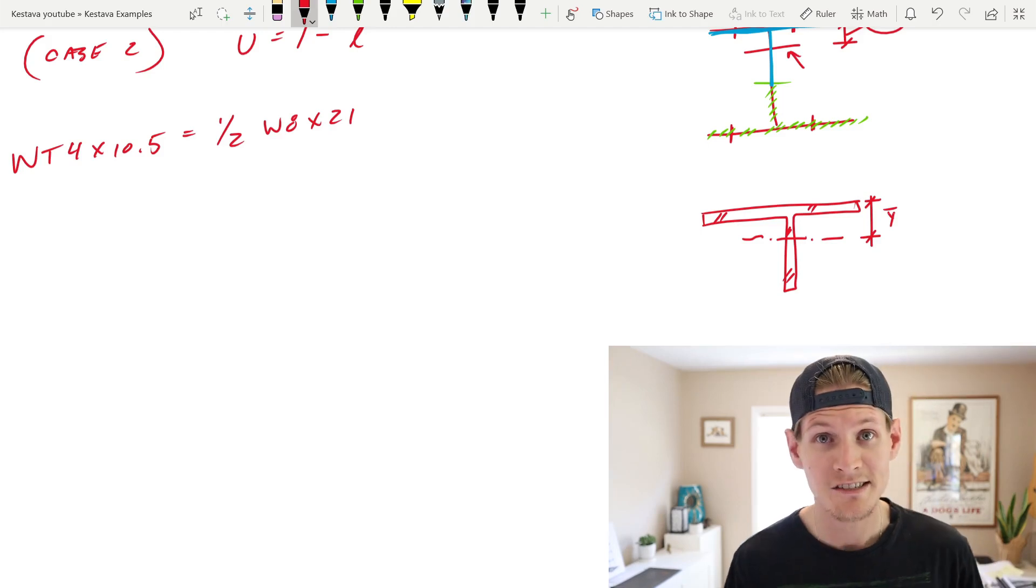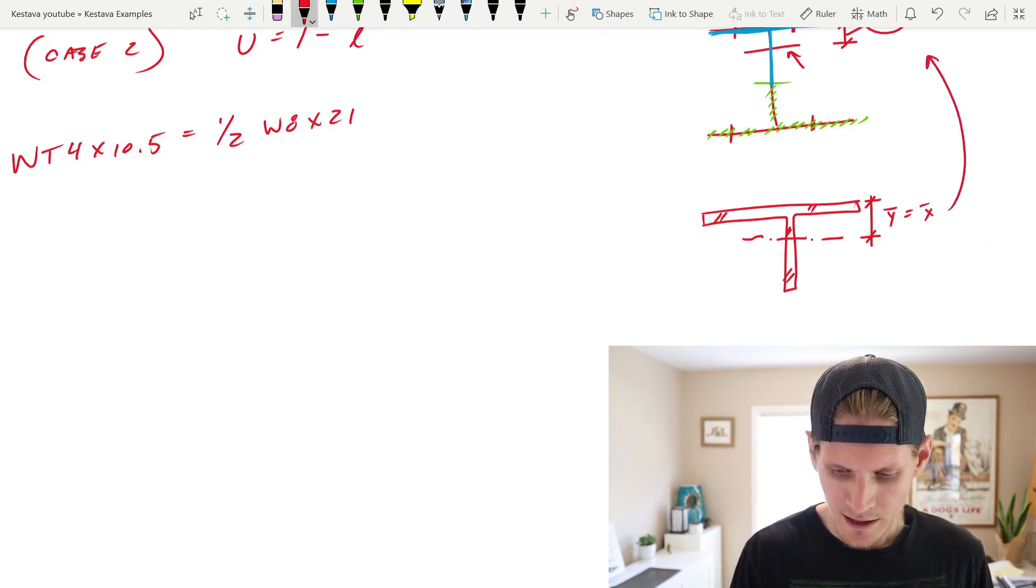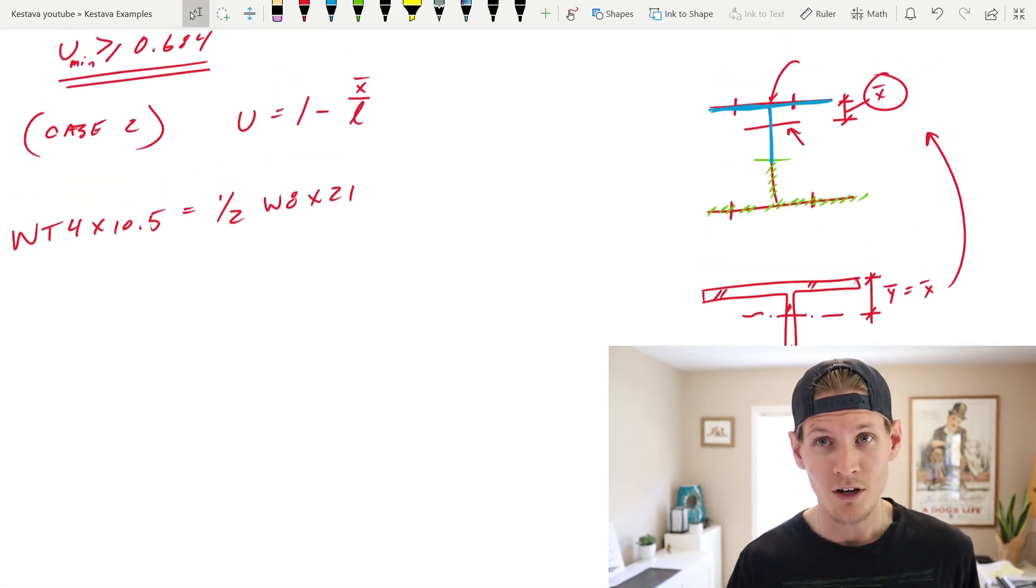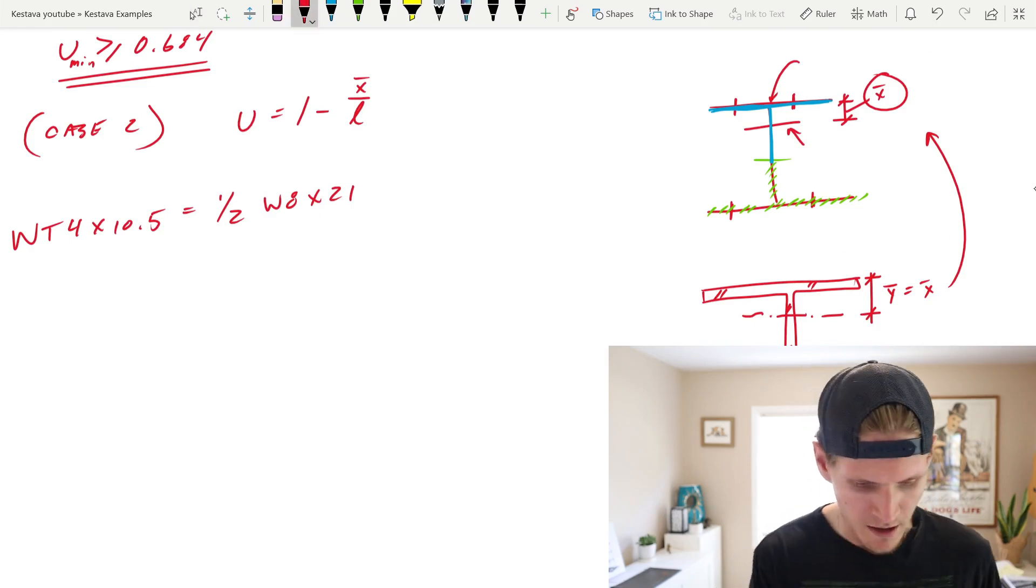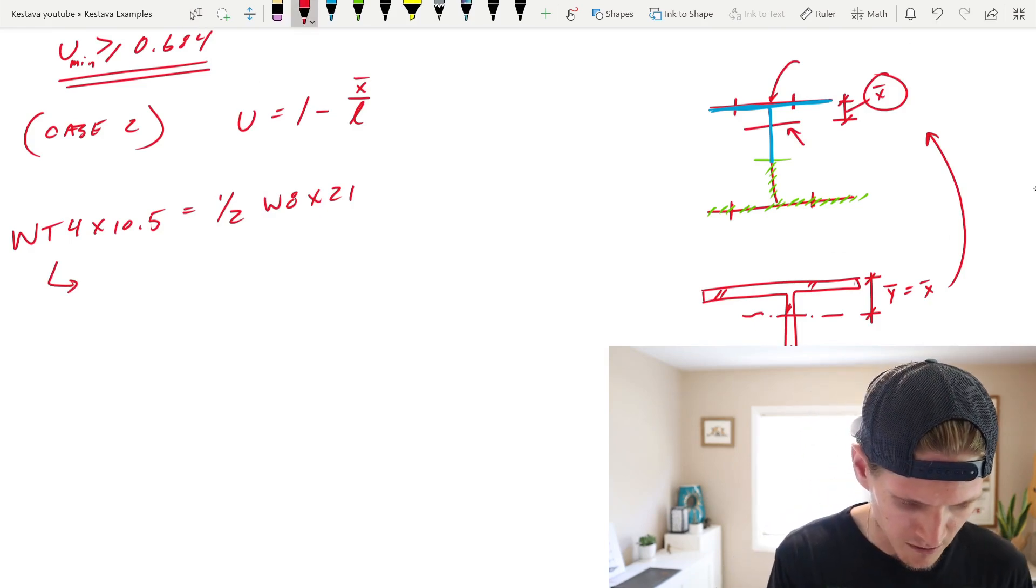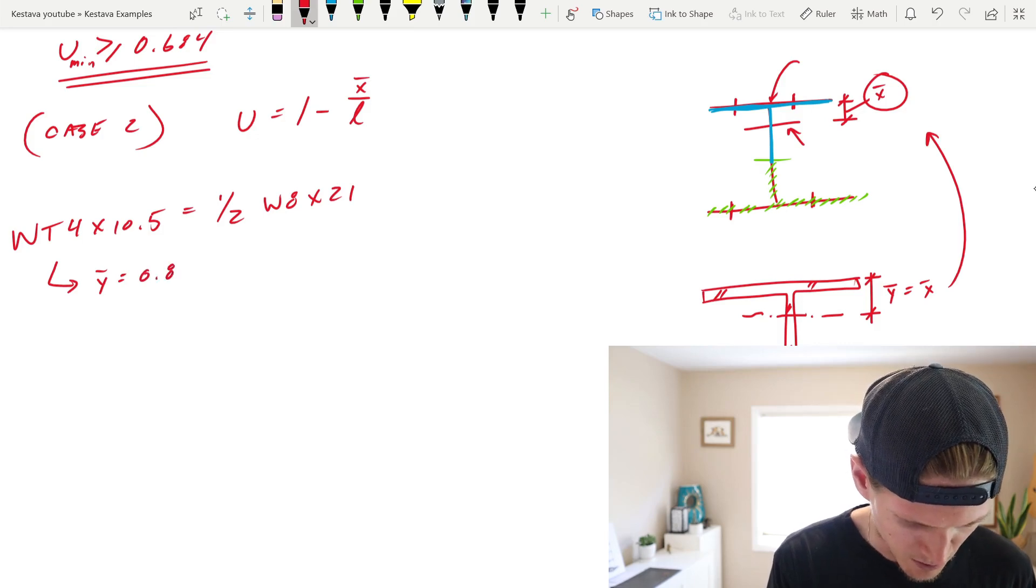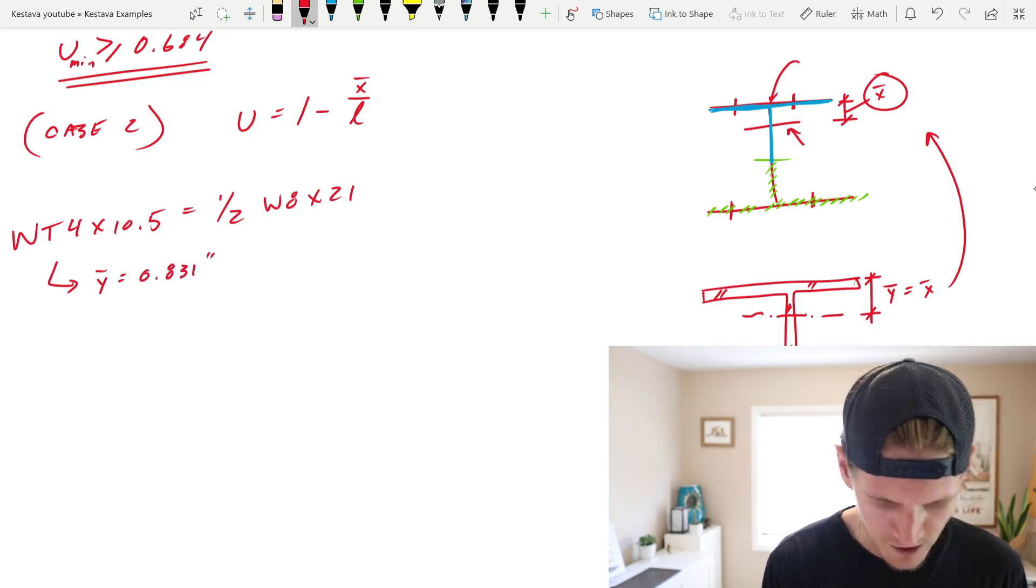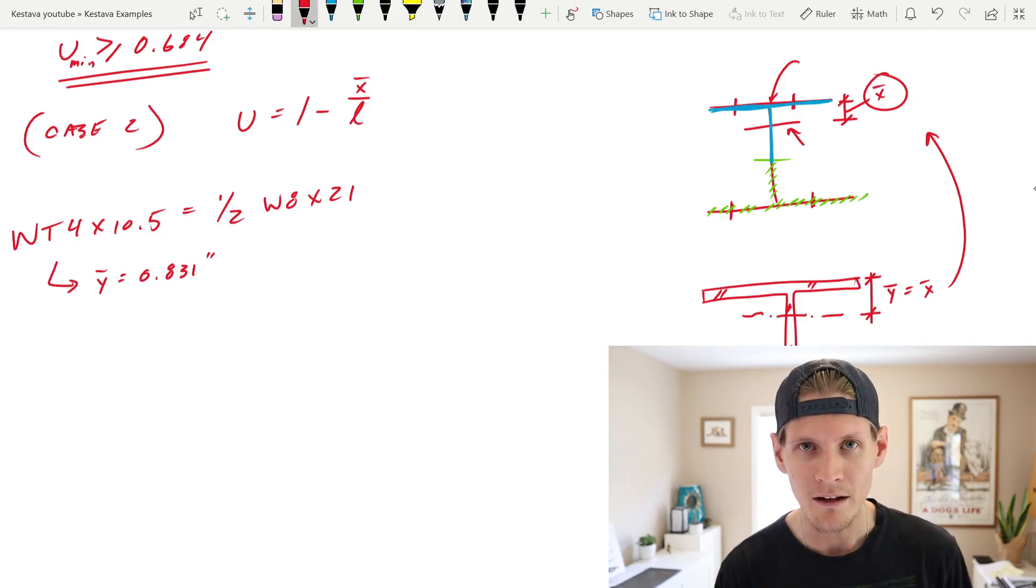so now we have a WT section and in table 1-1, they give you Y bar, which is that distance. Lo and behold, in this scenario, Y bar is equal to X bar. So, you can just substitute one for the other. Y bar in this case, for WT, is equal to 0.831 inches. Alright, so we have X bar. Now we just need L.